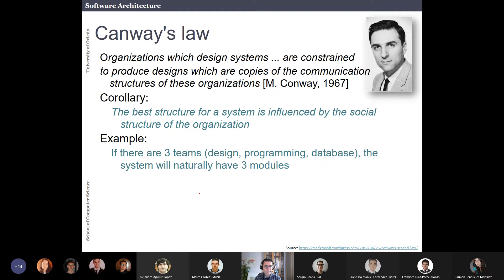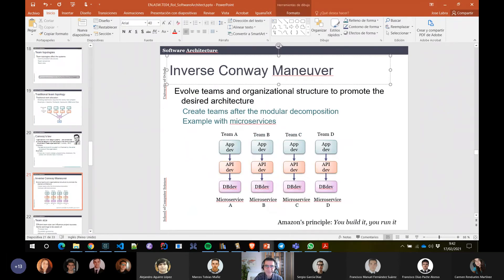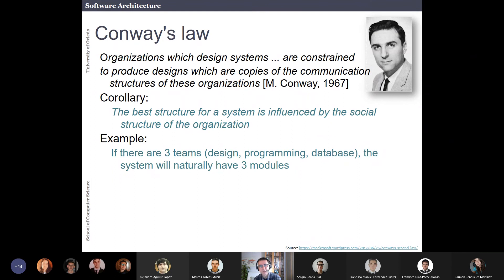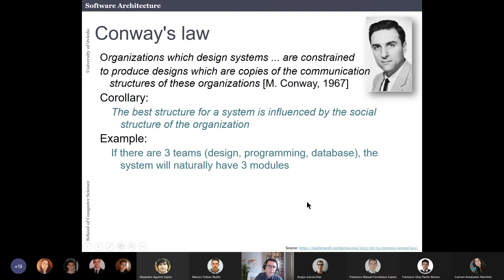This is called Conway's Law, described in 1967 by Melvin Conway. He said: organizations which design systems are usually constrained to produce designs which are copies of the communication structures of those organizations. When you have four teams, your systems will usually be divided into those four aspects. Sometimes that's okay, but sometimes it's not and you have other structures in mind.